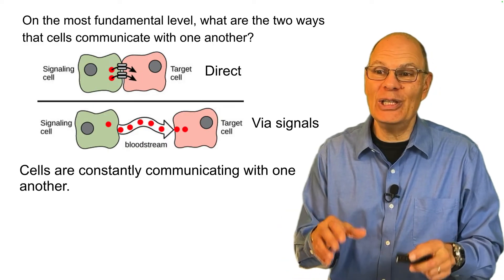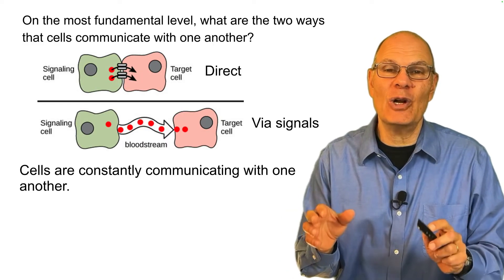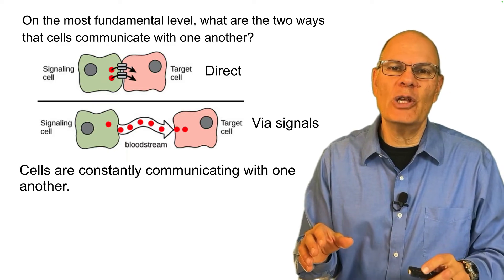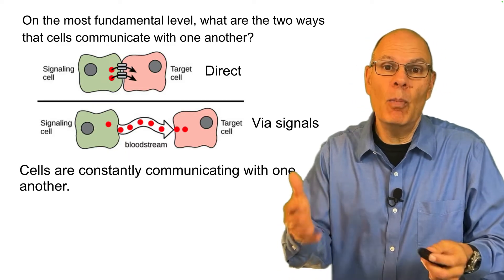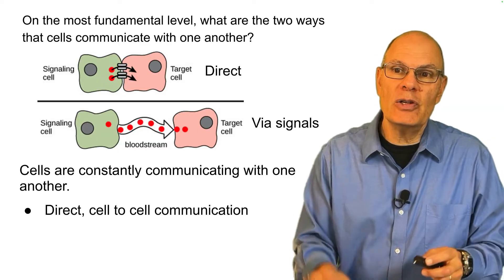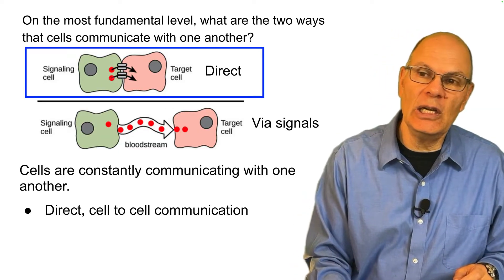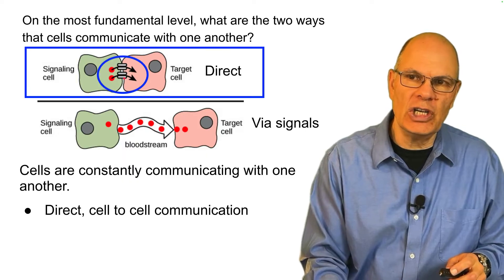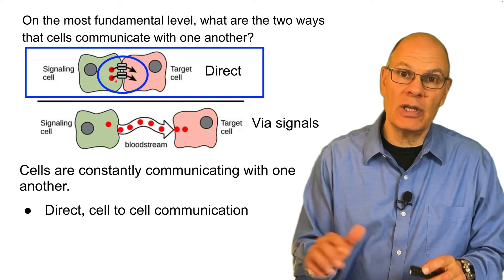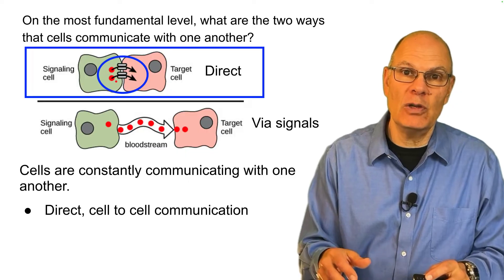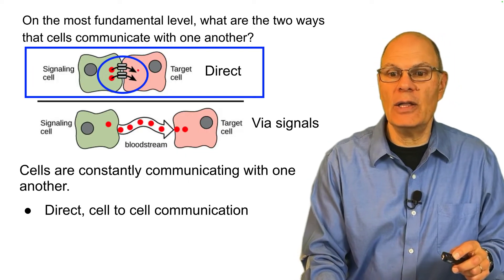Cells are constantly communicating with one another — it's a basic feature of life. Cells are never really on their own; they're always in populations or in multicellular organisms. There is direct cell-to-cell communication where there's some kind of junction between two adjacent cells, and molecules can pass between those two cells, enabling one cell to change the behavior of the other.